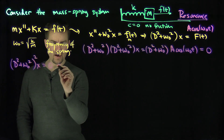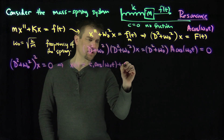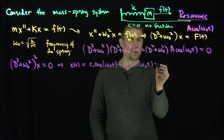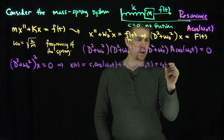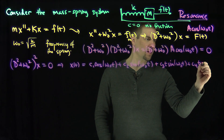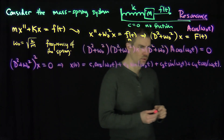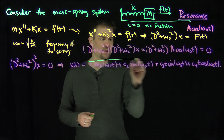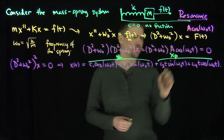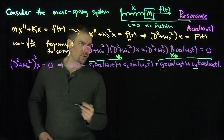We know what the solution to that is. x of t is going to be c₁ cosine ω₀t plus c₂ sine ω₀t — that's the homogeneous part — and then c₃t sine ω₀t plus c₄t cosine ω₀t. The first part is my homogeneous solution x_h, and the second part is my particular solution x_p. We need to determine coefficients c₃ and c₄ by plugging back into the original differential equation.